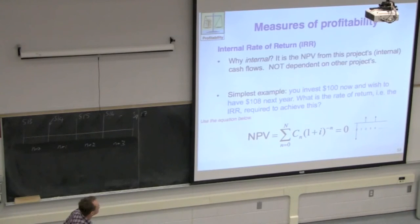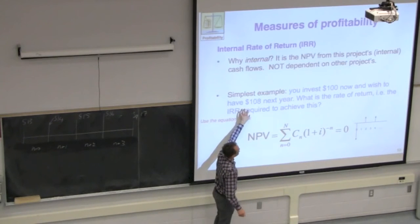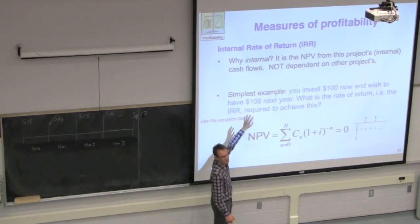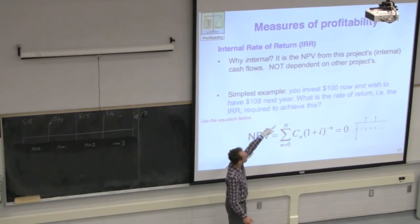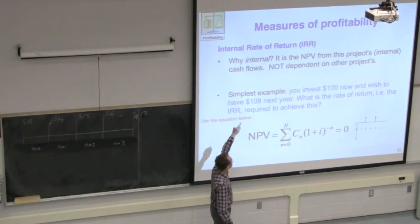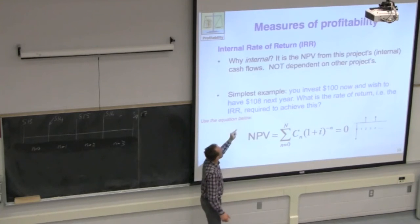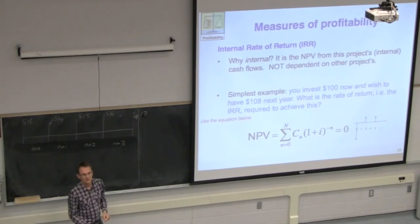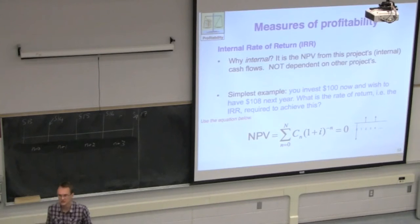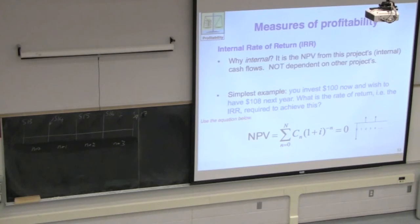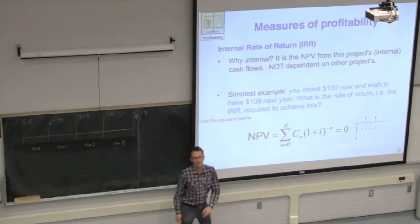Here's a really simple example. Don't even do any calculations — just think of what comes to mind. You invest a hundred dollars now and want a hundred and eight dollars next year. What's the rate of return you need? Eight percent. That's intuitive. Eight percent is the interest rate I need in order to get one hundred and eight dollars next year by investing a hundred dollars now. Now prove it to yourself using the formula.